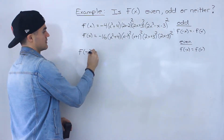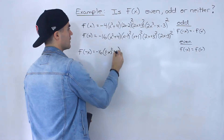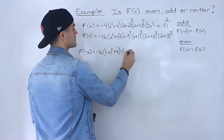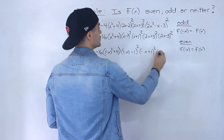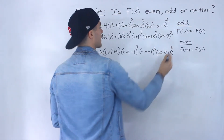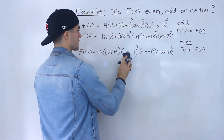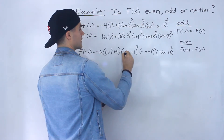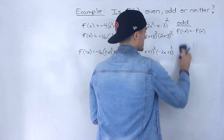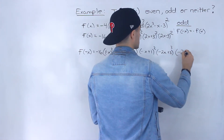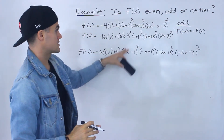So f of negative x — plug in negative x for all the x values. So we'd have negative 16, negative x squared plus 4, then negative x minus 1 squared, negative x plus 1 squared, 2 times negative x plus 3 squared, and negative 2x minus 3 squared. You got to be careful with your algebra here — check each step.